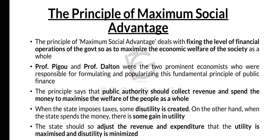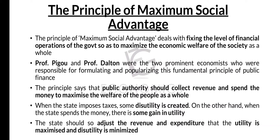When the state imposes taxes, some disutility is created. There is disutility for the citizens because a certain part of the income of the citizens is drawn by the government — the amount of disposable income in the hand of an individual citizen is decreased. Whether the government introduces a new tax or increases the weight of an existing tax, some disutility is created.